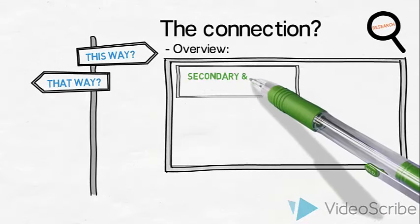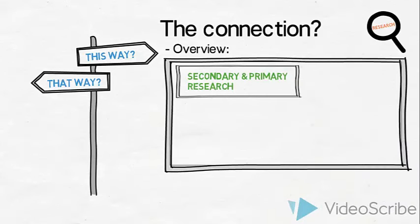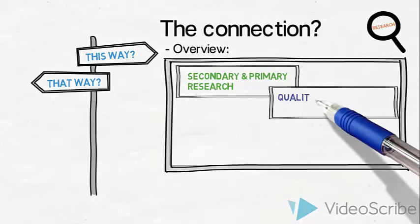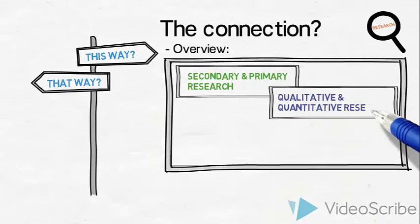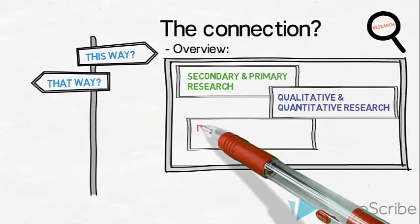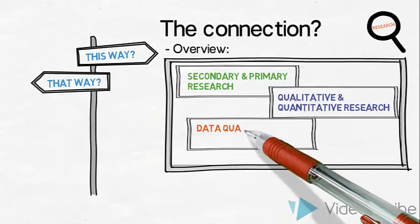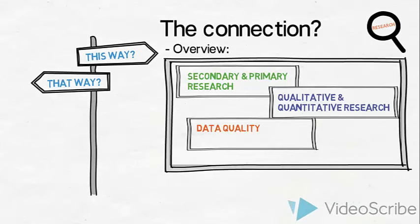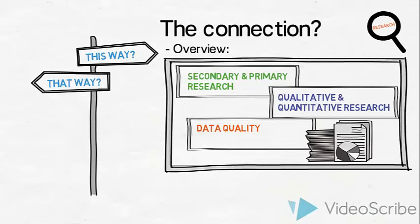We might wish to conduct both secondary and primary research. We would consider conducting qualitative and/or quantitative research and use different survey types. We would check and evaluate the quality of our research data by critically applying the terms validity and reliability.